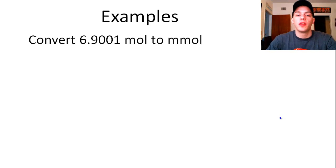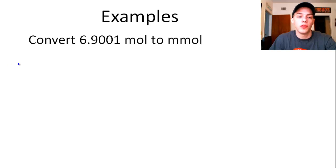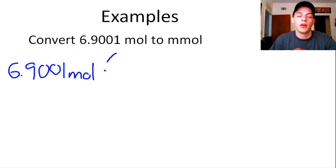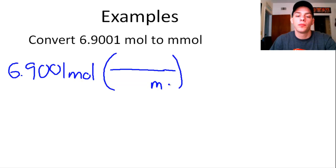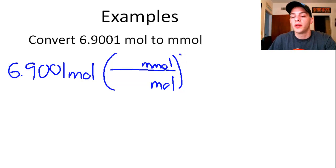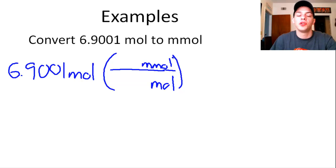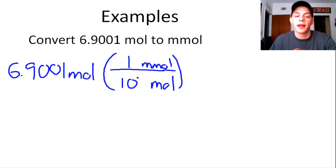The first example: we have 6.9001 moles and we want to convert that into millimoles. We have our starting quantity, 6.9001 moles. In our conversion factor, we're going to divide by the given unit, which is moles, and put the desired unit — millimoles — on top. Now it's just a matter of understanding the relationship between moles and millimoles. The prefix 'milli' is the multiplier associated with 10 to the negative 3, so 1 millimole is equal to 10 to the negative 3 moles.